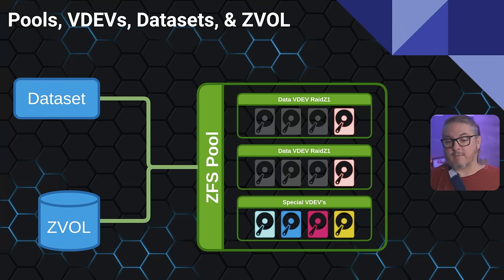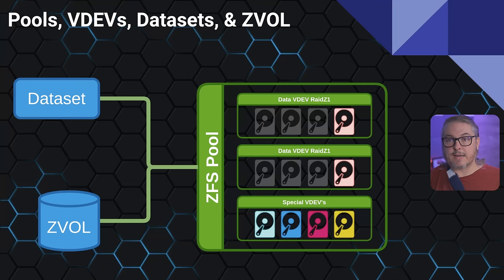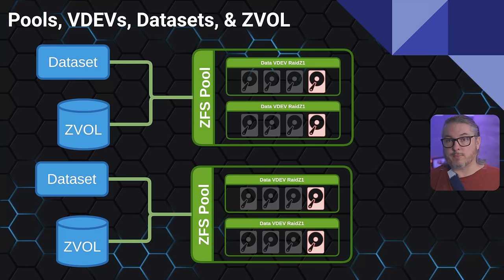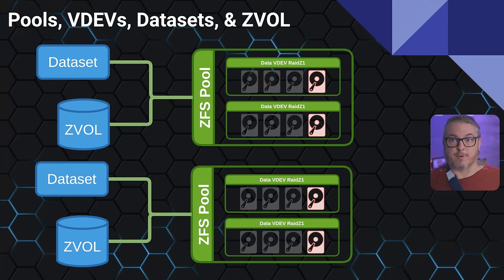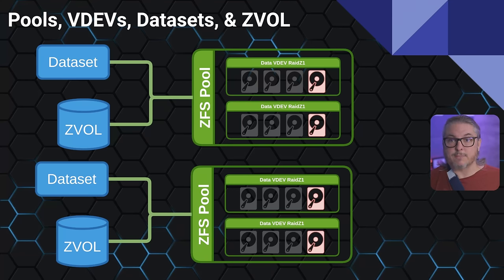So this ZFS pool having, say, some special VDEVs and a pair of RAID-Z1 — that's all taken advantage of whether you create a ZVAL or a dataset living within there. What does not work is if you have a system with more than one pool: you cannot have a dataset or ZVAL span multiple pools. That's not a built-in function. TrueNAS Scale is working on this with Gluster, spanning multiple pools across multiple machines, but we're narrowing scope here to datasets and ZVALs on an individual pool.